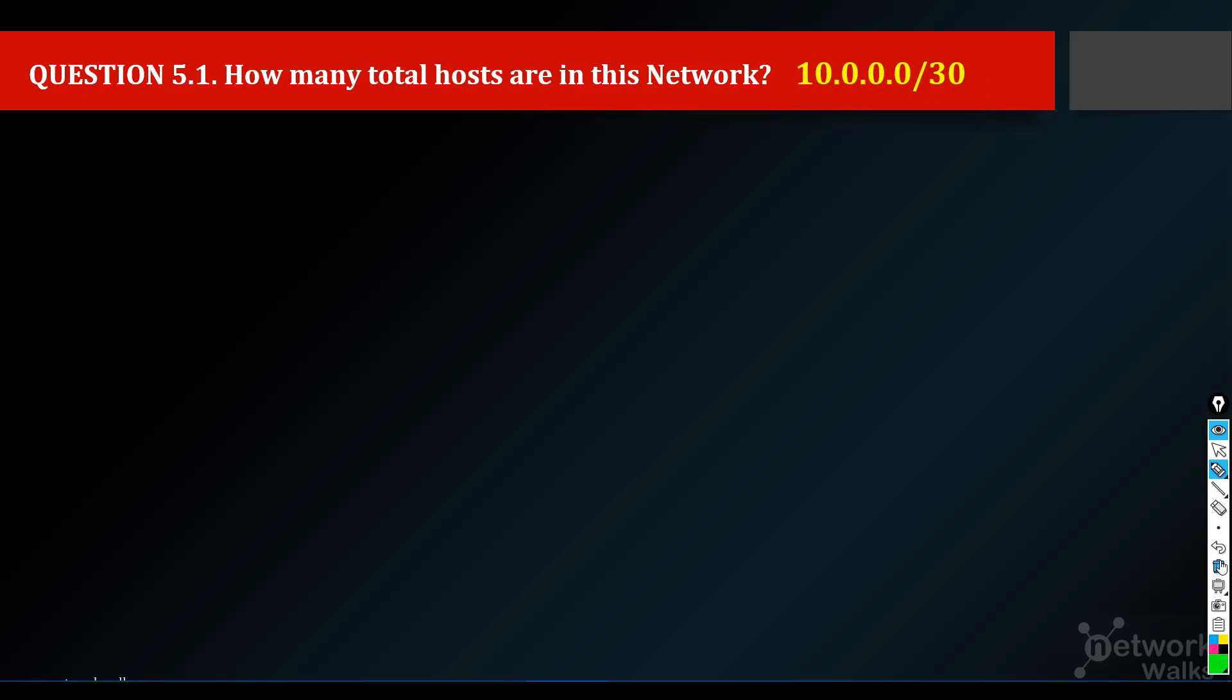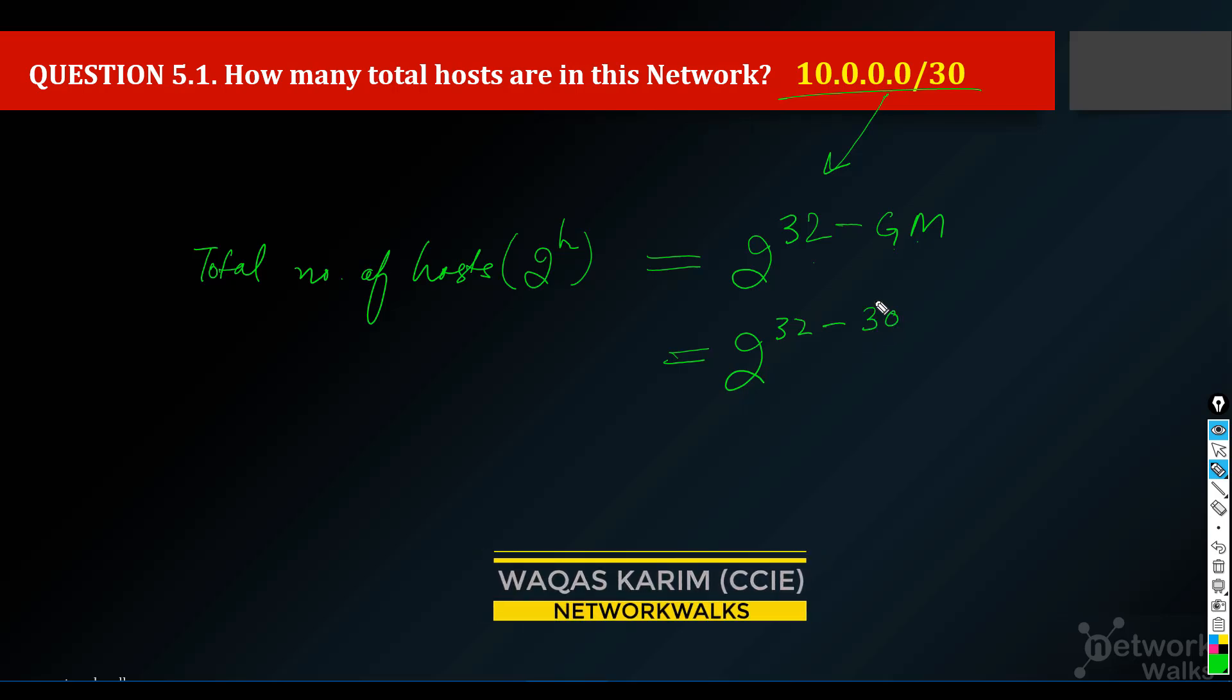How do we calculate? Very simple. To find number of hosts from a subnet, total number of hosts will be 2 raised to power h, which means number of hosts. The formula is 2 raised to power 32 minus given mask. In here, what is the given mask? 2 raised to power 32 minus given mask.